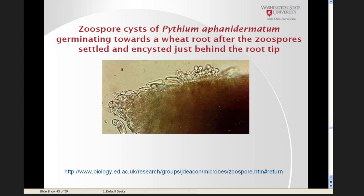In the case of roots, zoospores are attracted through chemotaxis to exudates from the root tip, where they will encyst. You can see Phytophthora-encysted zoospores germinating, with germ tubes penetrating into the host tissue.